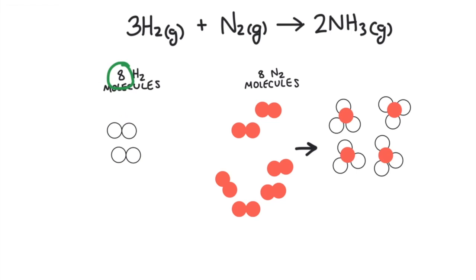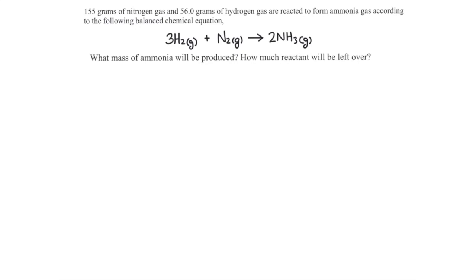There are much larger quantities being used in a laboratory and in chemical factories, so let's look at a more complex problem. This problem says 155 grams of nitrogen gas and 56 grams of hydrogen gas are reacted to form ammonia gas. What mass of ammonia gas will be produced and how much reactant will be left over?